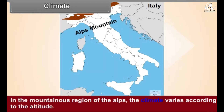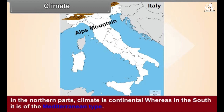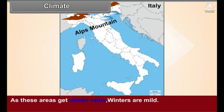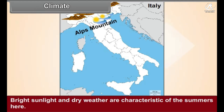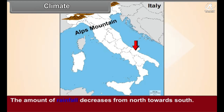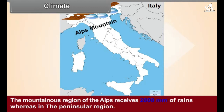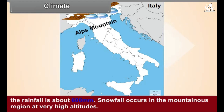Climate: In the mountainous region of the Alps, the climate varies according to altitude. In the northern parts, the climate is continental, whereas in the south it is of the Mediterranean type. As these areas receive winter rains, winters are mild; bright sunlight and dry weather are characteristics of summer. The amount of rainfall decreases from north to south. The Alps receive 2,000 mm of rain, whereas in the peninsular regions the rainfall is about 600 mm.